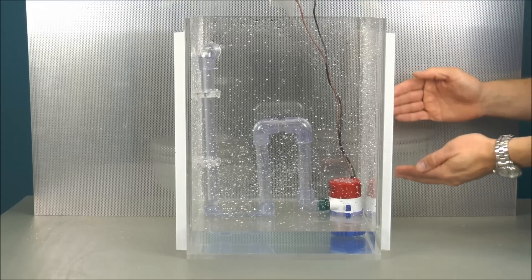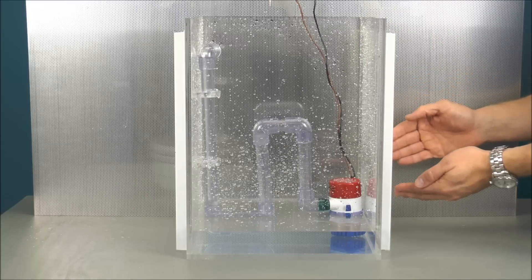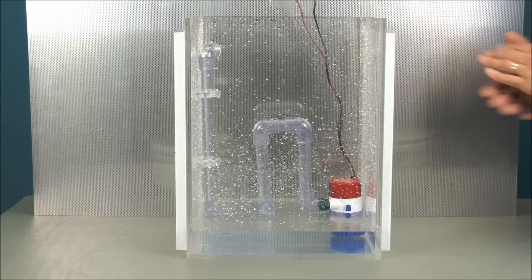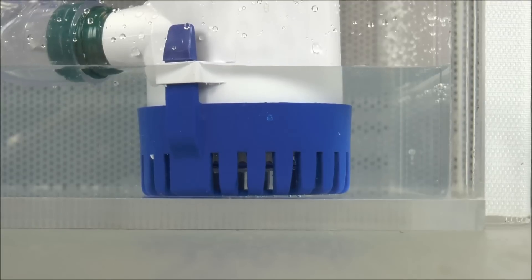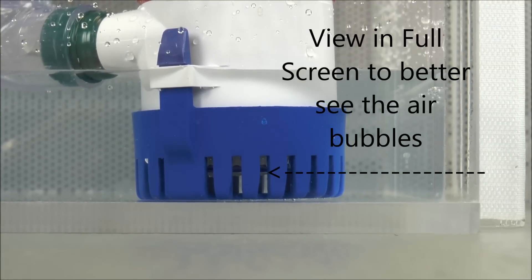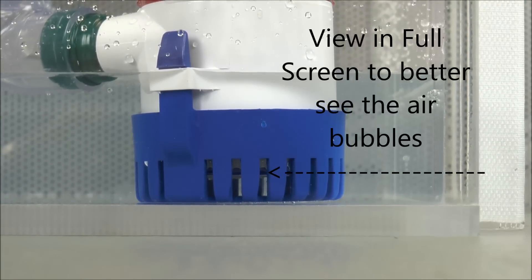Which means the water has to be in contact with the impeller to be able to pump the water out. That's a great example of an airlock right there. See that big air bubble on the underside of that running pump?